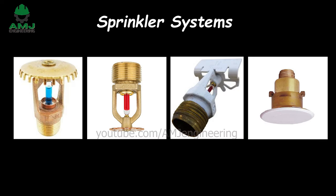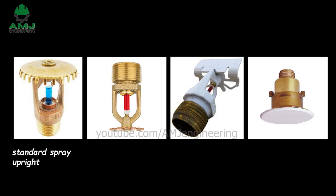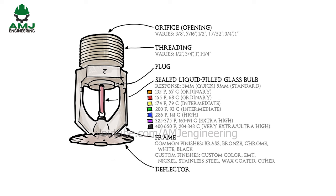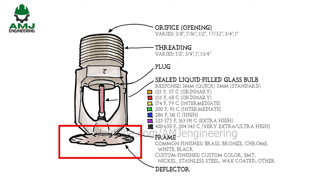Sprinkler systems. When it comes to the sprinkler head itself, the four most common styles are: standard spray upright, standard spray pendant, sidewall sprinkler, and concealed sprinkler head. Nearly all fire sprinklers are composed of the same components: a sealing assembly or plug that prevents water from escaping, a heat-sensitive element that allows water to flow at a given temperature, a deflector that distributes water effectively, and a frame.